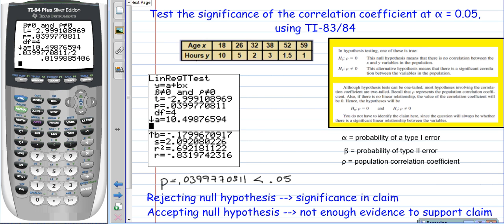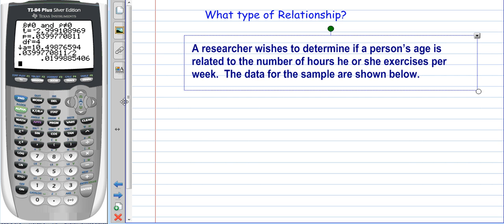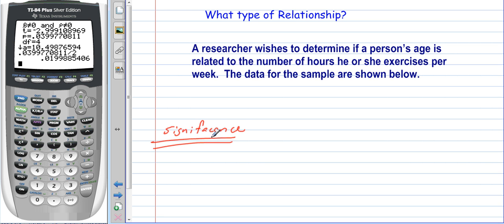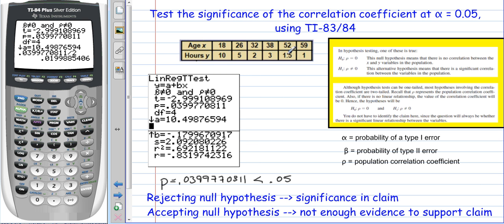But just so you understand, because that's the key thing, is what type of relationship. And that's where we're going to say that there is a significant relationship. Now, this is what the original question was: a researcher wishes to determine if the person's age is related to the number of hours he or she exercises per week. The data for the sample are shown below. And so that's what the question originally was. So that's where this data right here, this age and hours per week, we saw that we have a correlation quantity of negative 0.83, which means that as we get older, as one goes up, the other one goes down. We find out that in this particular situation, we have a p-value of 0.03, which means that that is significant, that we can go ahead and start to look further into the fact that there is a relationship in the fact that as your age goes up, your working out hours go down.